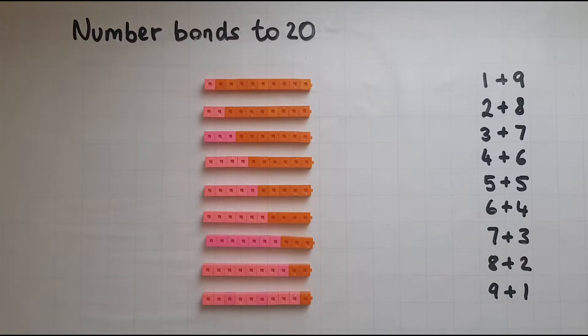These are almost as important as number bonds to 10, especially at this level, because when you add two numbers, if they are number bonds you can easily add them to 20 without requiring much thinking.